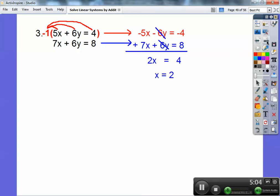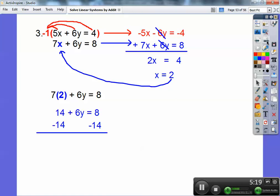And then 2 goes into 4 two times. So we're going to go ahead and plug 2 back into any equation that you want. I'm choosing the bottom equation. So 7 times 2 plus 6y equals 8. So 7 times 2 is 14. Then we're going to subtract 14 from both sides. 8 minus 14 is negative 6. So y equals negative 1. Don't forget your answer is an ordered pair.